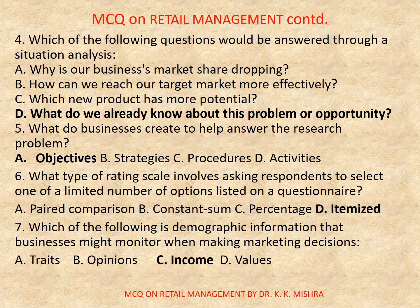Question number 7: Which of the following is demographic information that businesses might monitor when making marketing decisions? a) traits, b) opinions, c) income, d) values. Correct option is c) income.